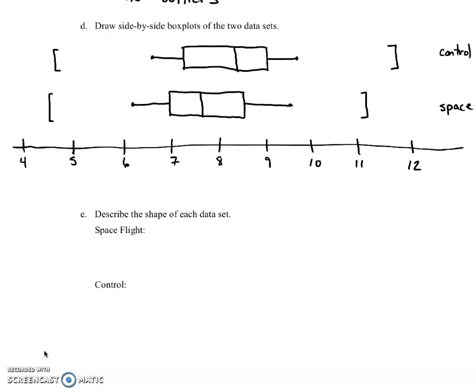To briefly finish up with the side-by-side box plots, remember the boxes are made by Q1, the median, and Q3, and the fences are the square brackets.